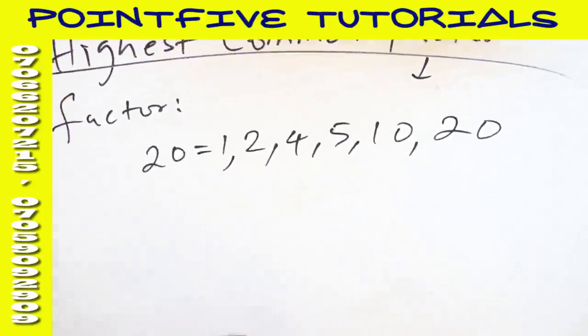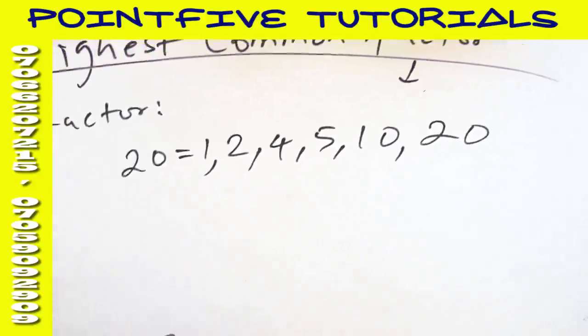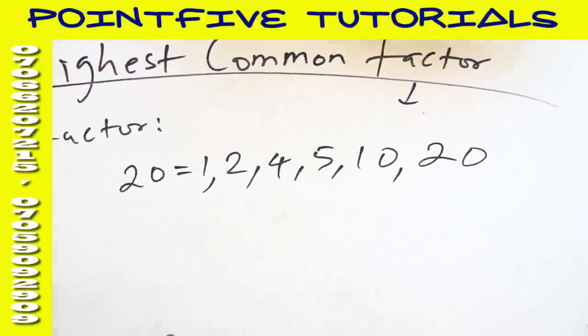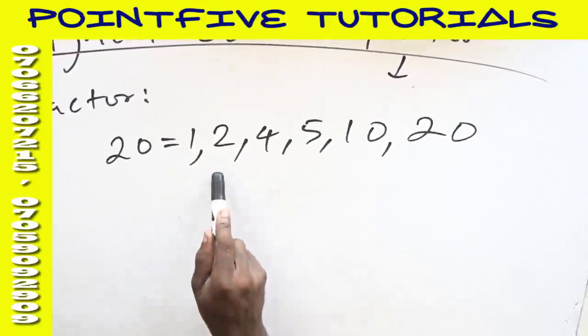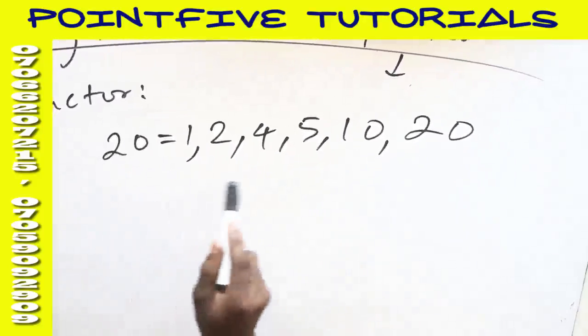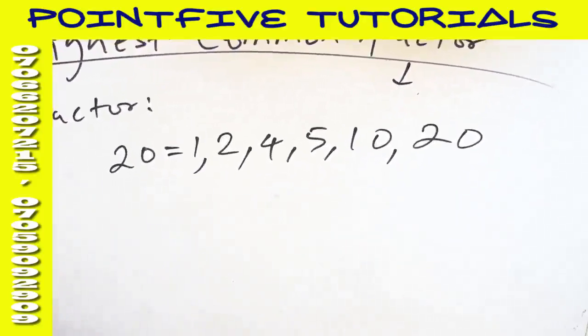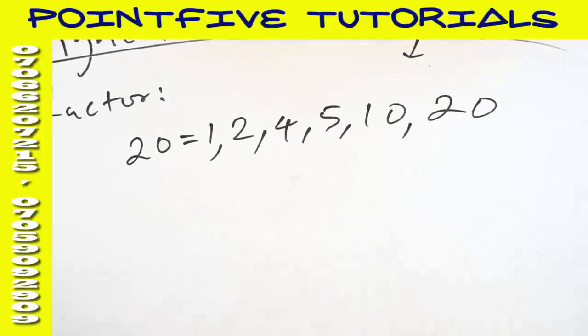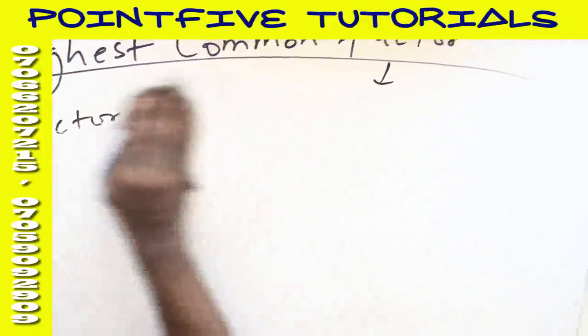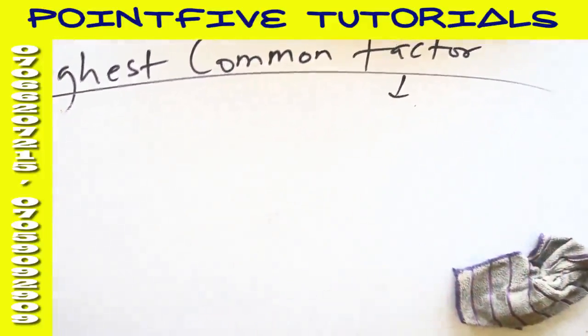Every number is a factor of itself because every number can divide itself without remainder. So a number is called a factor if it can divide a given number without remainder. This is the meaning of factor. Now, when somebody says common factors, before you say common factors, there must be two factors that you are comparing.